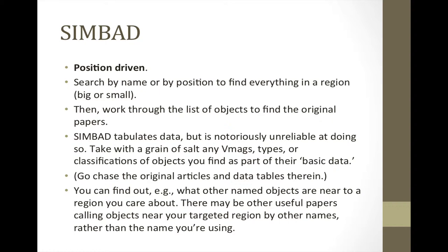SIMBAD does include some data, but it is notoriously unreliable for some of those data. You should take with a grain of salt any of the V magnitudes, multiband magnitudes, spectral types, or even the classifications of objects. The classifications in SIMBAD are often really weird — just because SIMBAD says it's a YSO doesn't mean it's a YSO, and if SIMBAD doesn't say it's a YSO, it doesn't mean it's not. But SIMBAD does provide reliable links to original articles, so you can chase the original data there. You can also use SIMBAD to find what other named objects are near a particular object or region, catching papers with different names that you might miss in ADS.